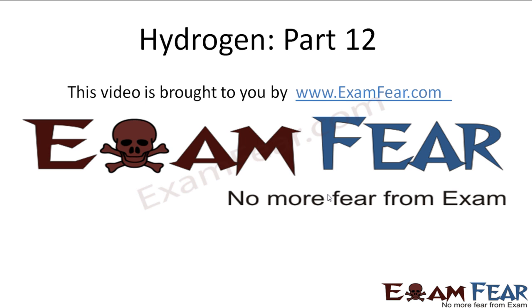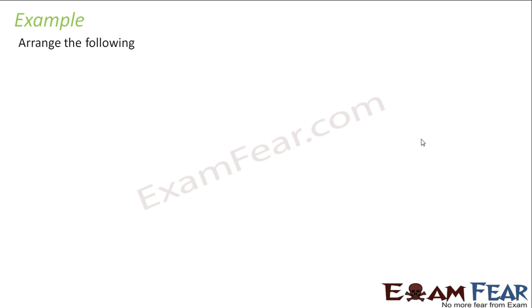Hello friends, this video on hydrogen part 12 is brought to you by examfear.com. No more fear from exam. So we have to arrange the following CAH2, BEH2, TIAH2 in order of increasing electrical conductance.